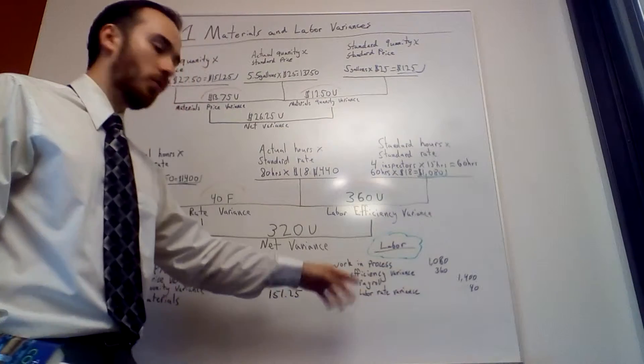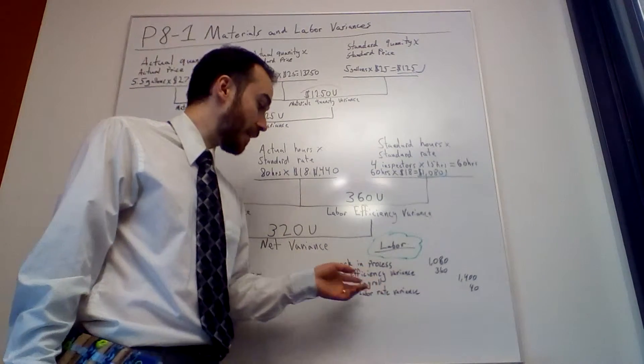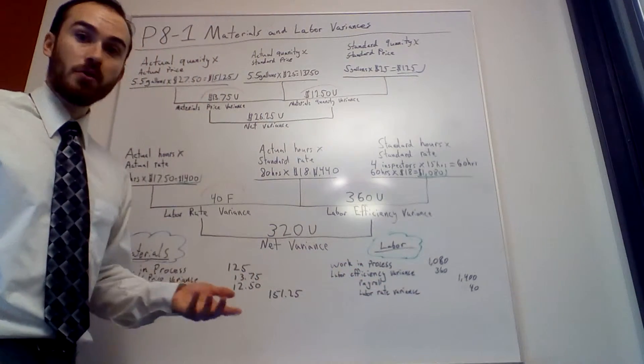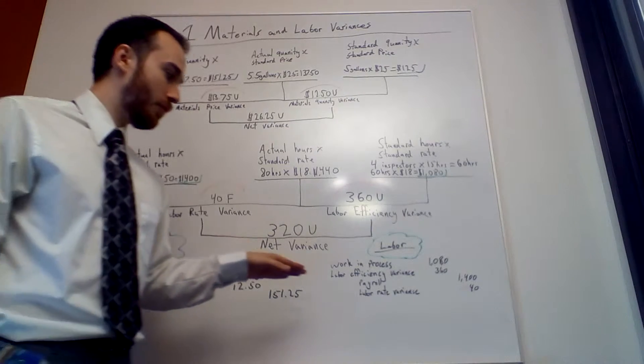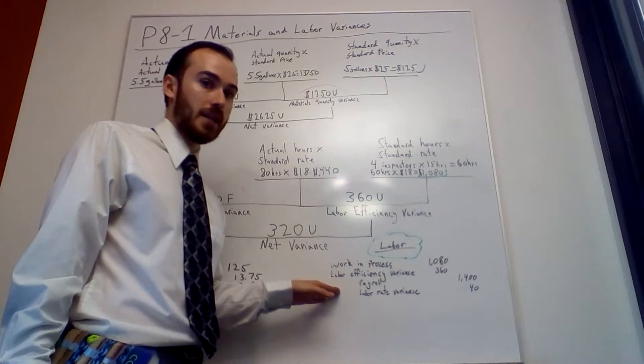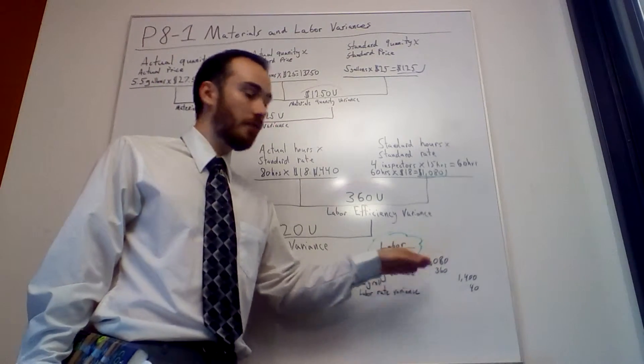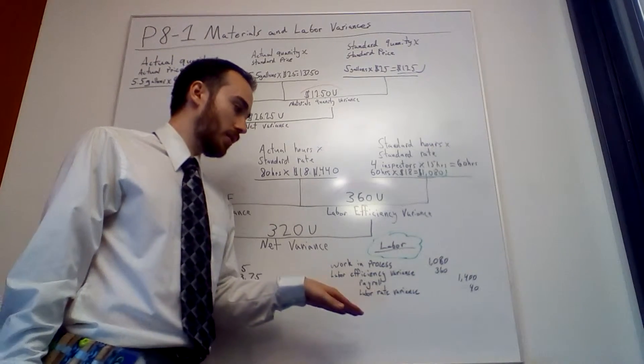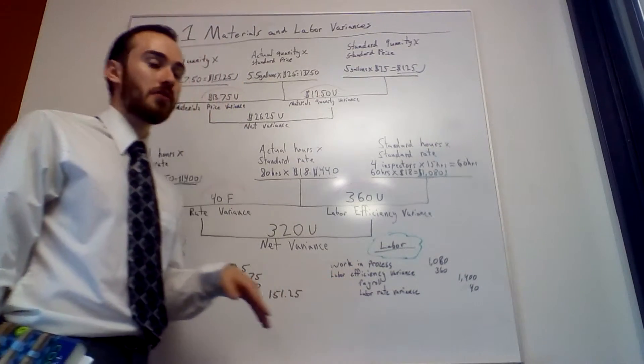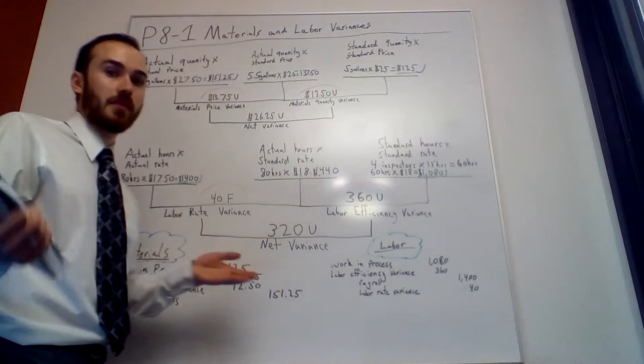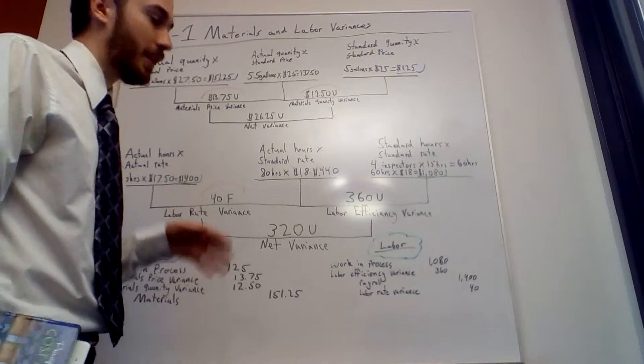When we look back, we can tell the inspectors, hey, you need to watch your hours because we can't have you go over this much all the time. We only had it budgeted for $1,080, but you went $360 over, no good. That's the basis of cost accounting - you've got to keep track of that.